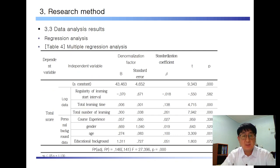Next, regression analysis results. As a result of the regression analysis, it was found that in the log data, the total learning time and the total number of learning sessions, as well as the regularity of the learning start interval, had a significant effect on the total score. Subsequently, among personal background data, the results are shown in Table 4.